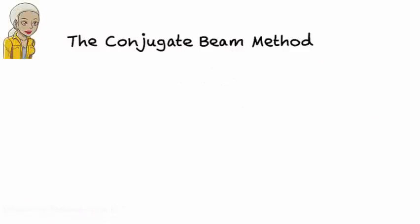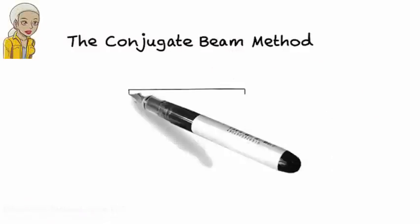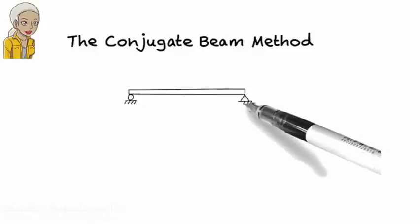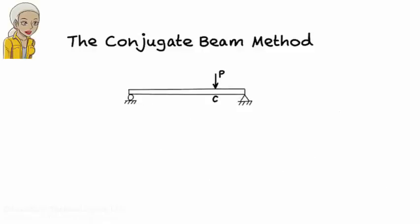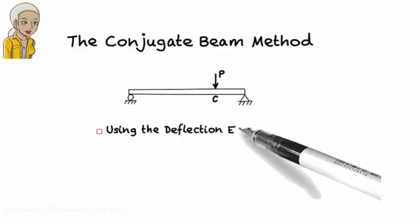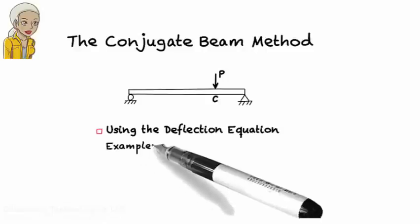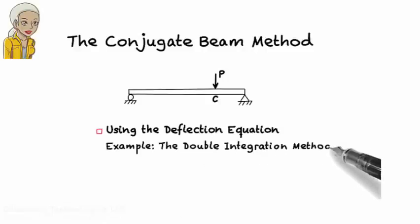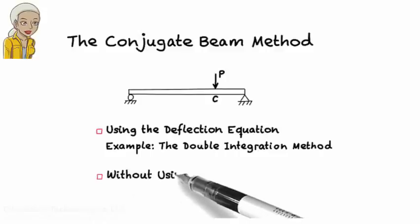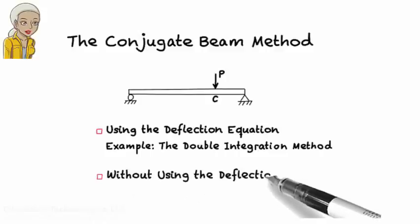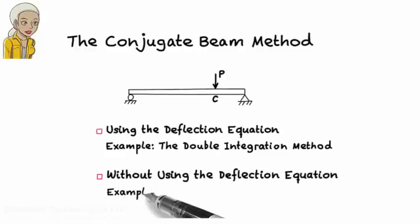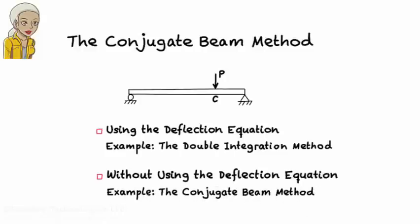The conjugate beam method. How would you go about determining the deflection in a beam at an arbitrary point, say deflection at point C in this beam? One approach is to first derive an equation for deflection and then evaluate it at the point of interest. The double integration method, discussed in previous lectures, is an example of this approach. Another approach entails calculating deflection at the desired point without needing to write an explicit equation for deflection. The conjugate beam method is an example of this approach. This lecture presents and illustrates the conjugate beam method for calculating deflection in simply supported beams.